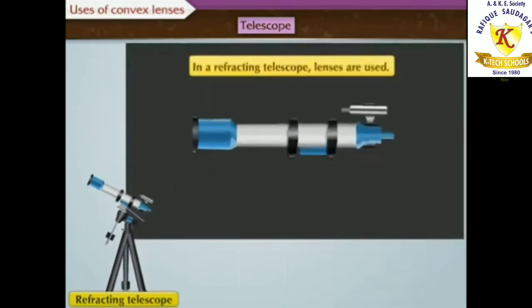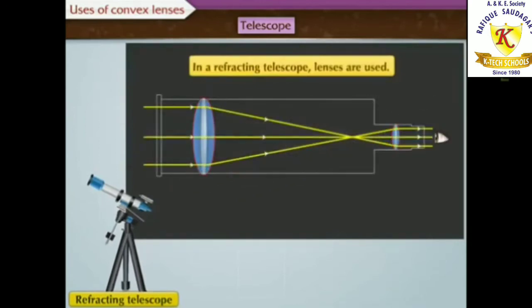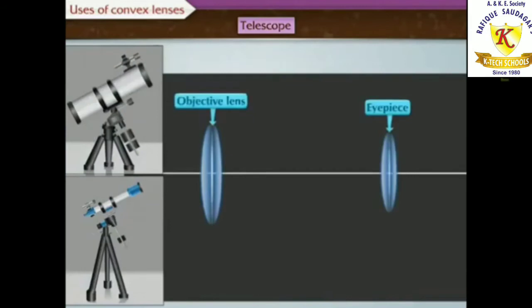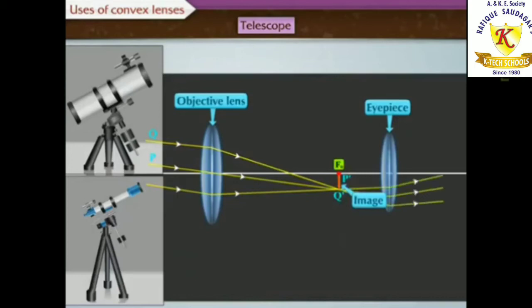Refracting telescope and reflecting telescope. In refracting telescope, lenses are used. And in a reflecting telescope, a combination of mirrors and lenses are used. In both of these, the image formed by the objective acts as object for the eyepiece, which forms a final image.